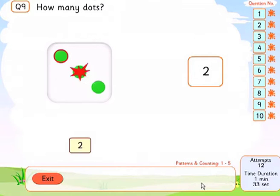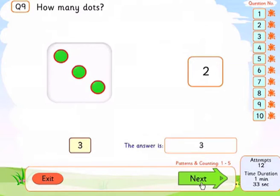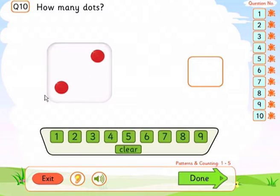The student is unable to tell which of two numbers is larger and their relationship relative to each other. Basic difficulties with subitising. The student lacks an intuitive feel for the number of dots in the pattern.